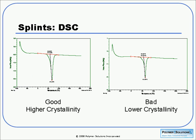So again, we applied our favorite technique of DSC. On the left is the good sample, on the right is the bad. We see again that the area of that melting peak is quite different between the two samples — the good sample is showing more crystallinity than the bad.